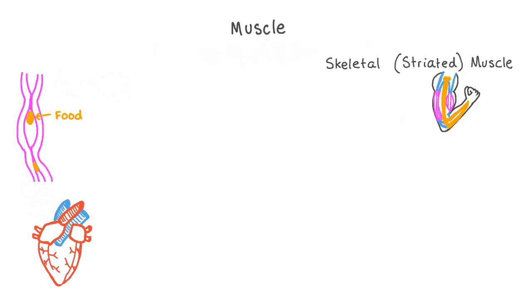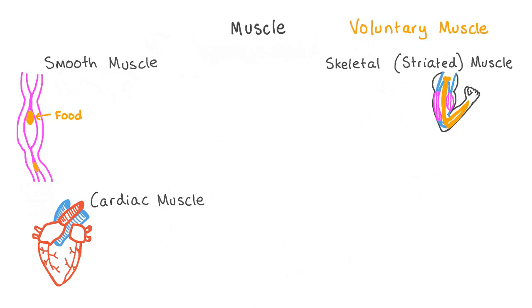There are three main different types of muscle which carry out these different functions: skeletal muscle, which is sometimes called striated muscle, smooth muscle, and cardiac muscle. While skeletal muscles are under our conscious control and so are called voluntary muscles, smooth muscle and cardiac muscle are involuntary muscles — they're controlled subconsciously and we cannot decide to simply stop them from working.